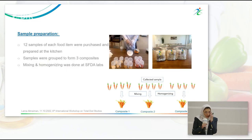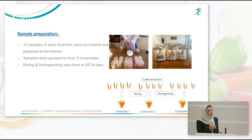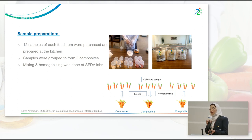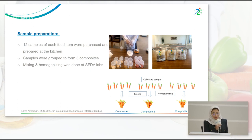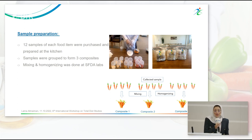After cooking, 12 samples of each food item were purchased. Samples were grouped into three composites to minimize dilution effects and make traceability of contaminated samples easy. Mixing and homogenizing of samples was done at SFDA labs. Here are pictures of the samples prepared for the laboratory to mix and homogenize.